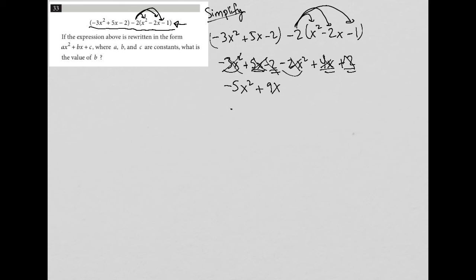Well, if we were writing this as ax squared plus bx plus c, like how would I relate that to what I just wrote? That would mean that a is equal to negative 5, b is equal to 9, and c is equal to 0. So b is what we're looking for. The answer is 9.